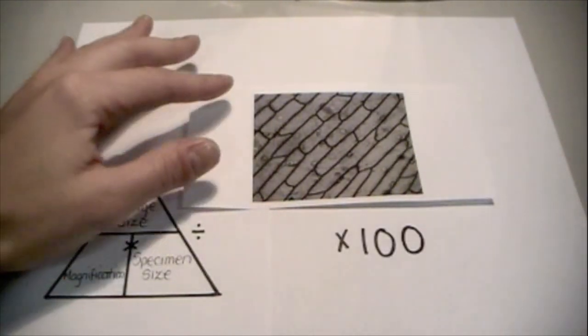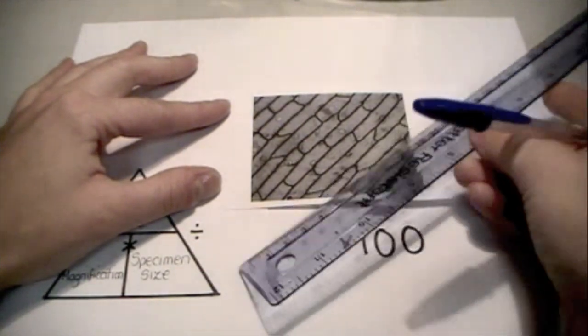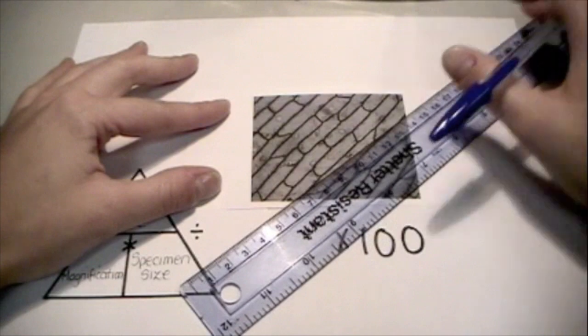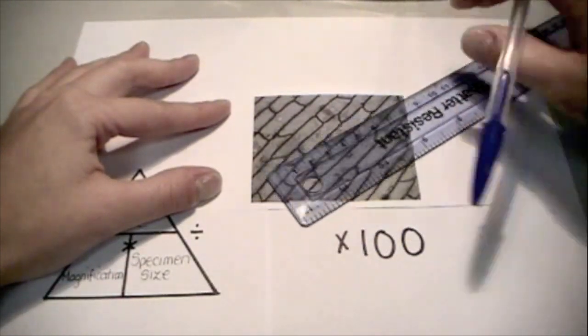So in order to find the actual length of the cell, first of all, we're going to have to measure it to see what the length is on the image. So we're going to have to find the image size.